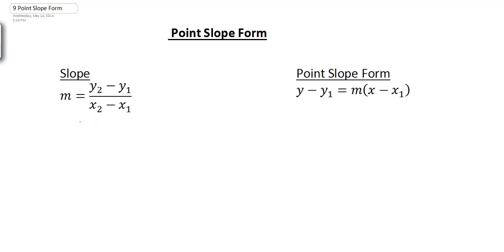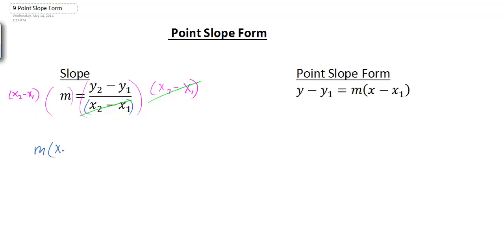I want to look at what happens if we solve this equation differently. Here it's solved for m, but what happens if we multiply both sides of this equation by the denominator x2 minus x1? On the right-hand side, that's going to cancel out, and on the left, we're going to end up with m multiplied by x2 minus x1 equals y2 minus y1.